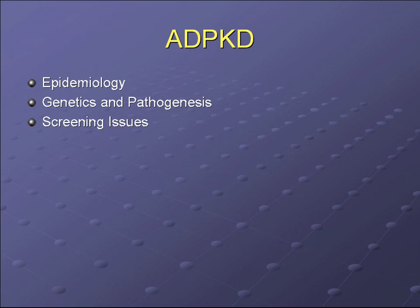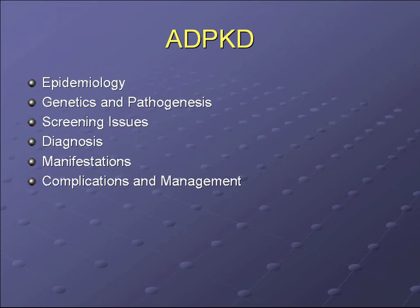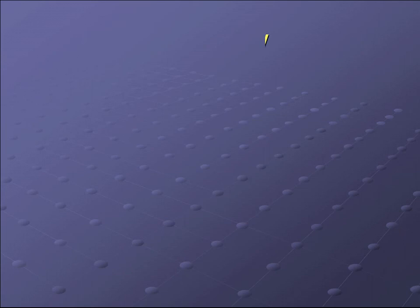We'll move on to talk about autosomal dominant polycystic kidney disease. We'll cover epidemiology, genetics and pathogenesis, screening issues, how to make the diagnosis, manifestations — mostly focusing on renal manifestations — and then complications and management. We'll also discuss some of the transplant issues.